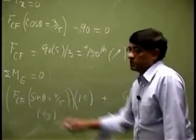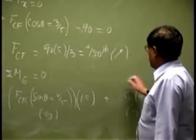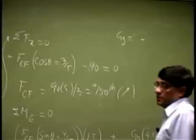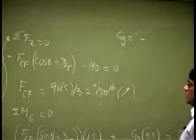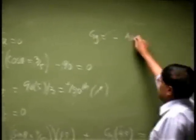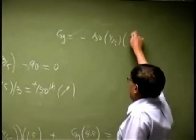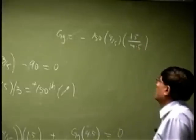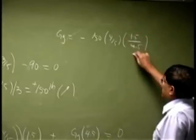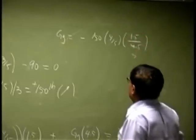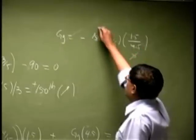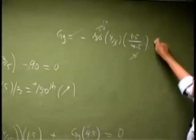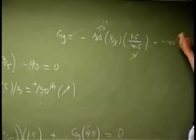See, we already know this. So GY should be negative and then Fcf is 150, 4 fifth, 1.5 divided by 4.5. So that is 3 and that is 50 and that is 10 and we get negative 40 pounds.